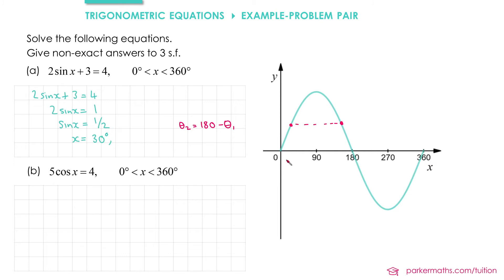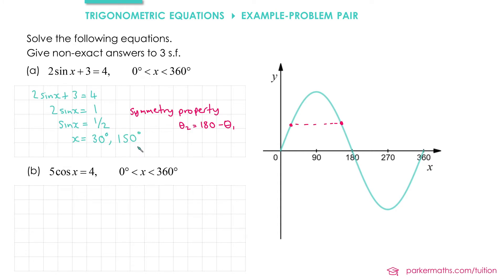As you get more confident with these equations, you don't really need to refer to the graphs as much — if you just know the rule, you can apply it directly. Applying the symmetry property here: if our first solution is 30, we do 180 minus 30 to get 150 for the second solution.